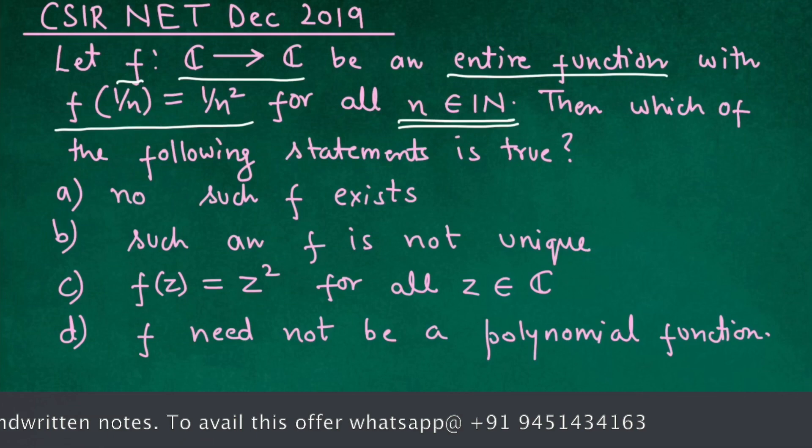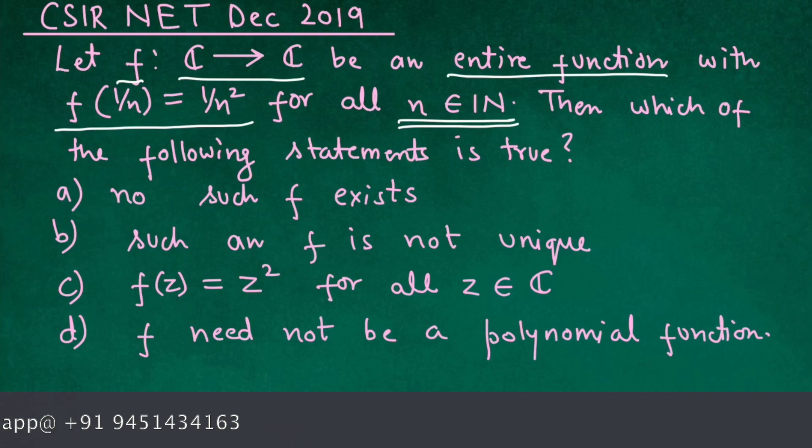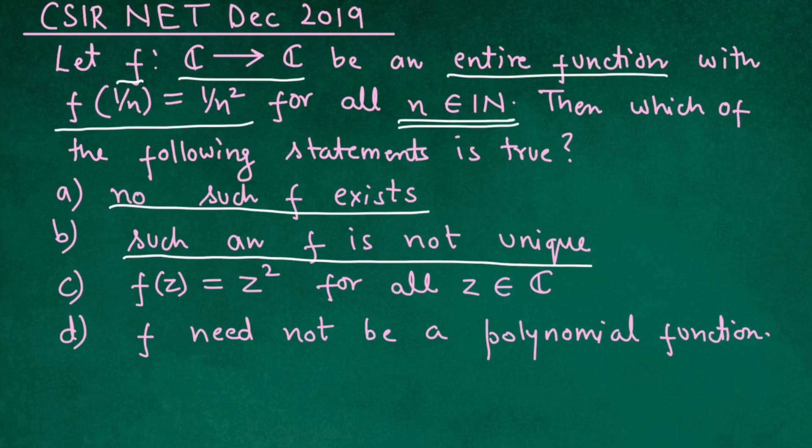Then we have to check which option is correct. In option a, no such function f exists. In option b, such an f is not unique. In option c, f(z) is z². And in option d, f is not a polynomial function. So let us see which option is correct.